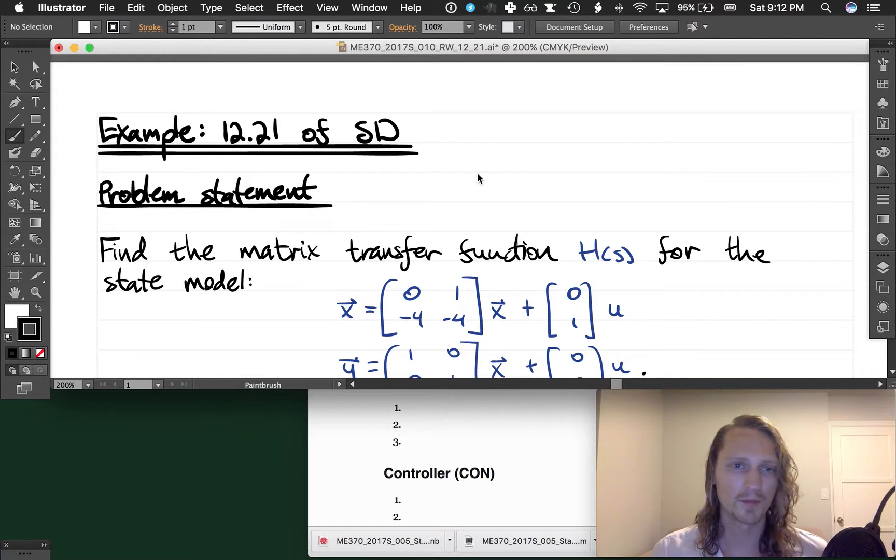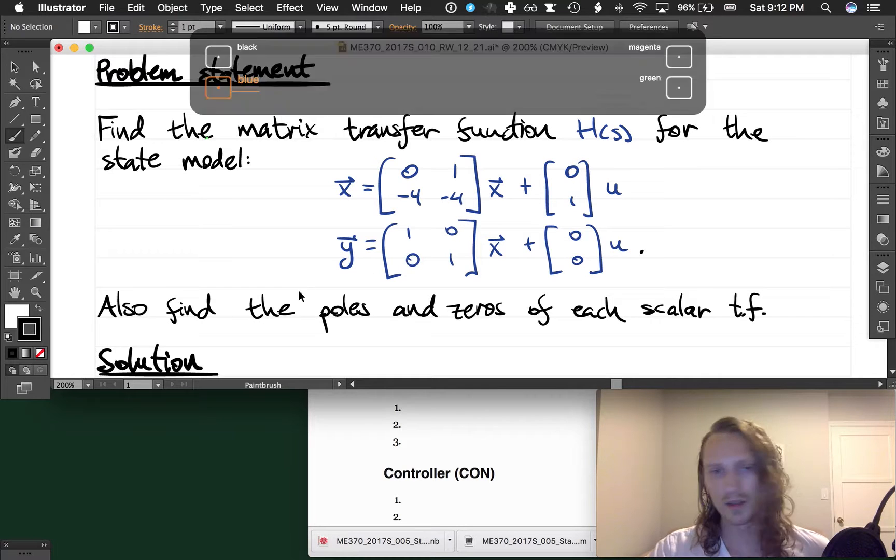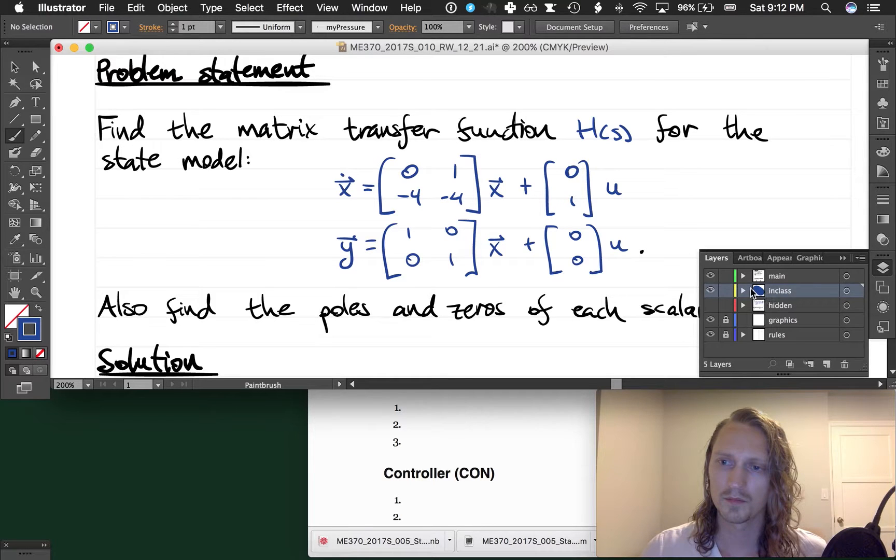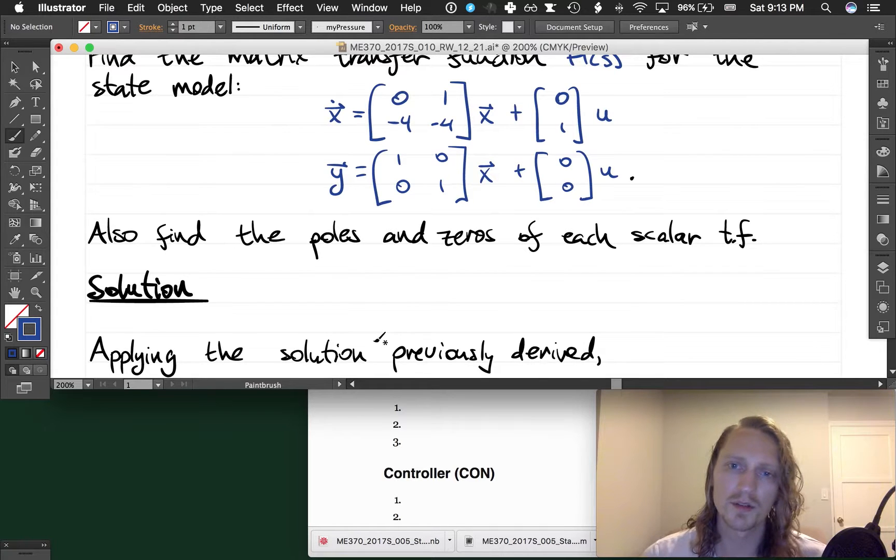So here's the problem. It's pretty straightforward. Let's find the matrix transfer function H(s) for the state model shown. The state model has, as always, an A, B, C, and D matrix. It is missing a dot on the x, which I'm sure you already noticed. Let me just... yeah, that works. Also find the poles and zeros of each scalar transfer function.